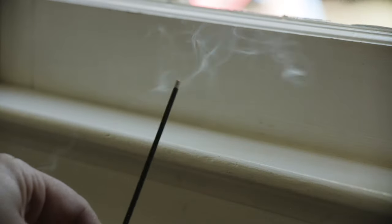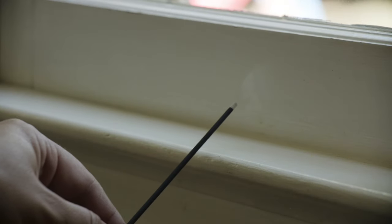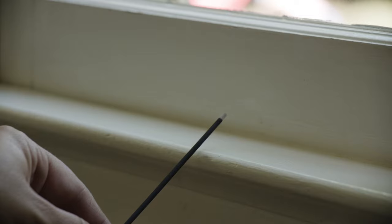Start by inspecting the window or door. Look for places where you can see light shining through. You can also use the smoke from an incense stick or candle and watch its direction to see if you have air movement.